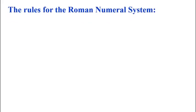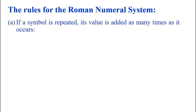Let us discuss the rules for the Roman numeral system. First, if a symbol is repeated, its value is added as many times as it occurs. That means II is equal to 2. Then XX is 20, X is for 10, so XX is 20 and XXX is 30.